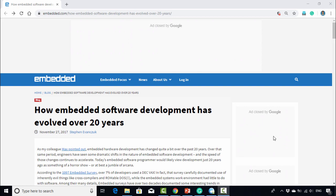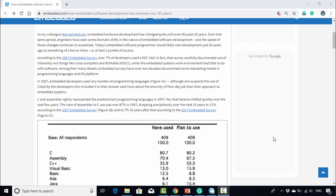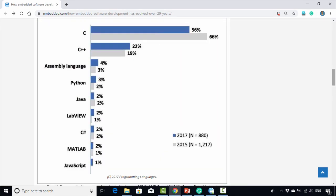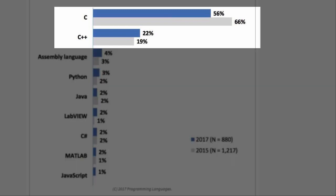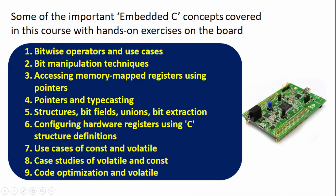According to a 2017 embedded.com survey, C is still one of the most widely used programming languages for embedded code development. This course gives particular emphasis to learning C programming concepts practically for microcontroller use cases.